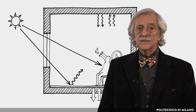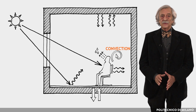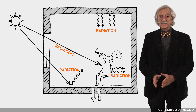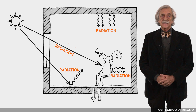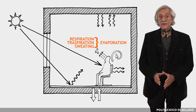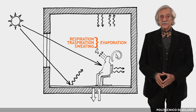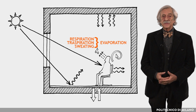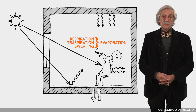The human body exchanges heat with the environment through convection, which depends on skin temperature, air temperature and speed; radiation, which depends on the temperature of the skin and on the temperatures of the surfaces enclosing the space; transpiration, which can turn into sweating; and respiration, which results in the evaporation of water with the consequent removal of heat from the skin or lungs. It depends on the relative humidity of the air.